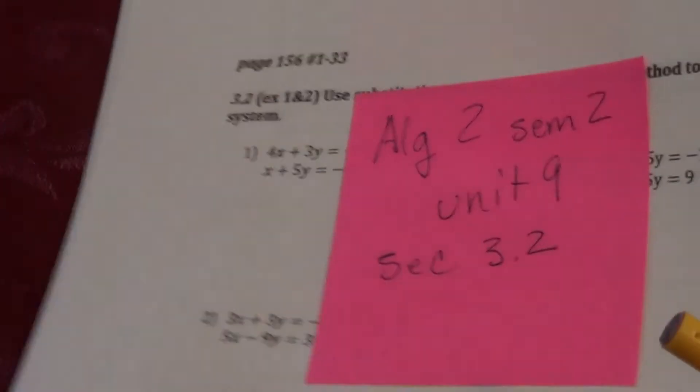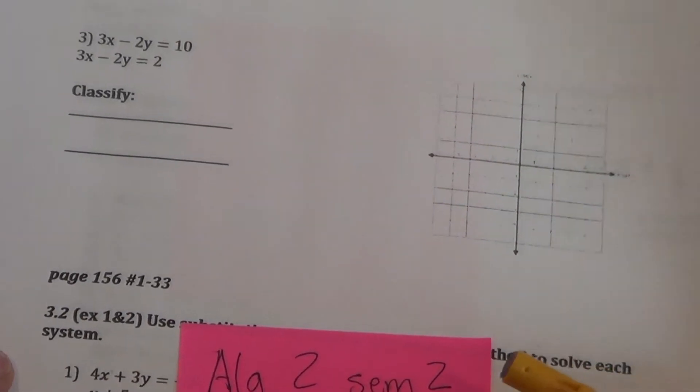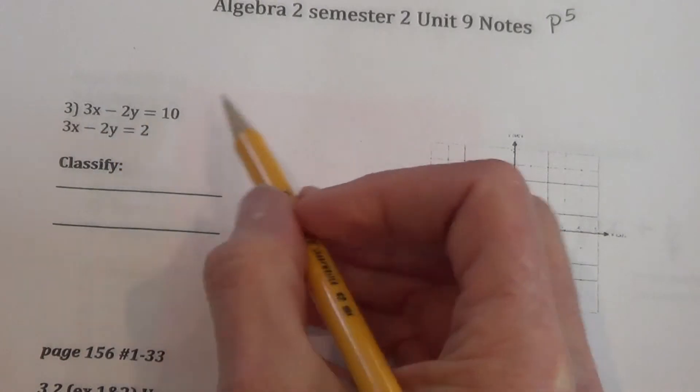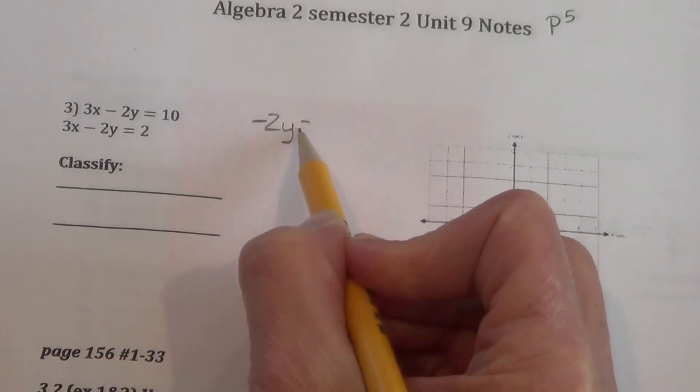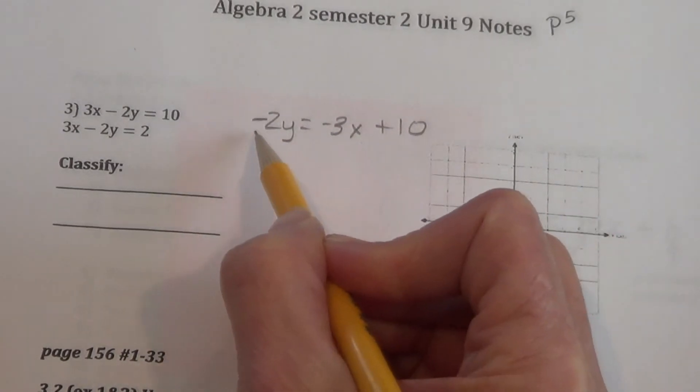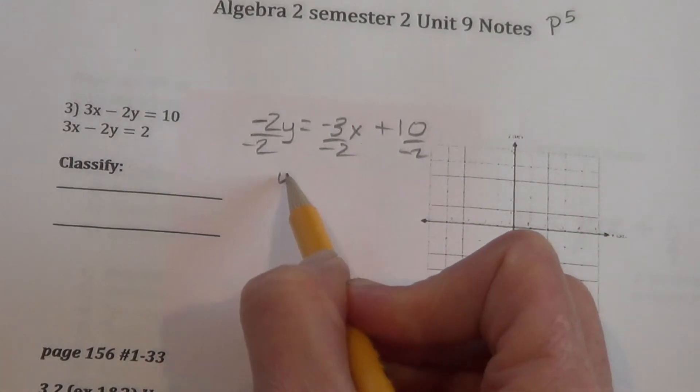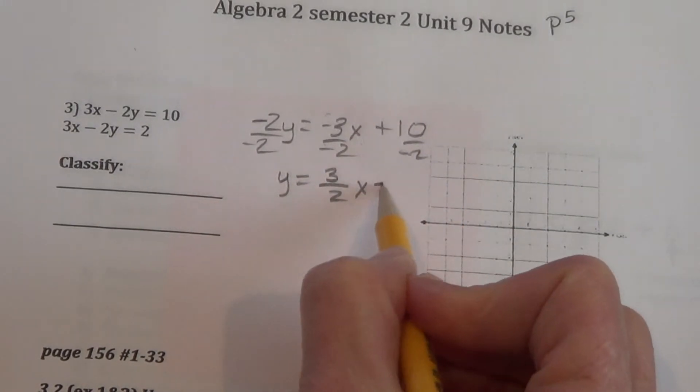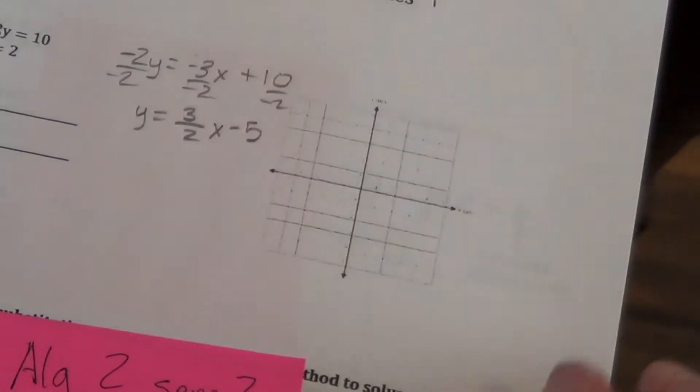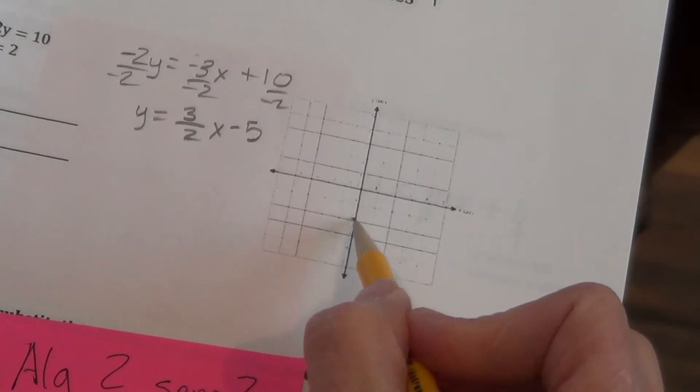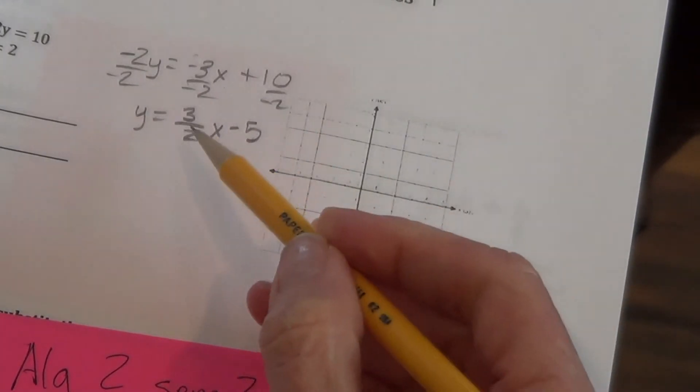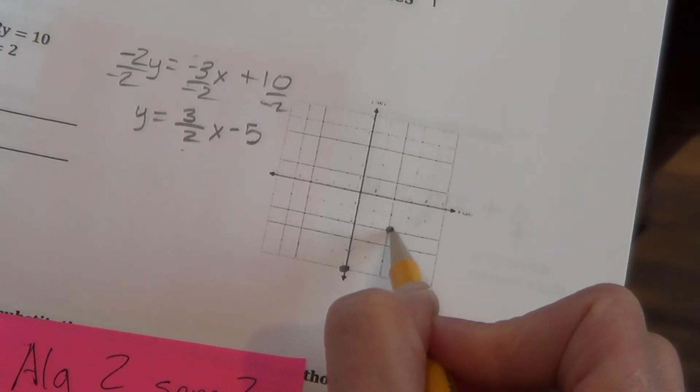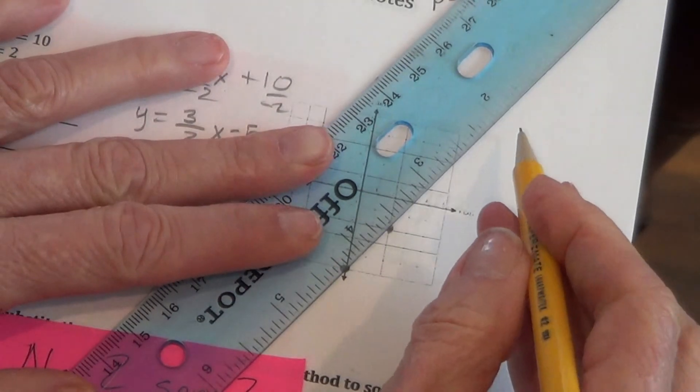Next page, page 5. We have one more set to graph. We need to get the y by itself. So, in doing this, we'll subtract 3x from each side. So, we'll have negative 2y equals negative 3x plus 10. Now, we divide by negative 2. And, we get y equals negative over negative is positive. 3 halves x. Negative 2 goes into 10 negative 5 times. So, we come over and we graph that. We go to our y-intercept at negative 5. And, now, from there, we rise 3 and we run 2 to the right, because it's positive. So, we rise 1, 2, 3, 1, 2 to the right. And, now, we draw our line.